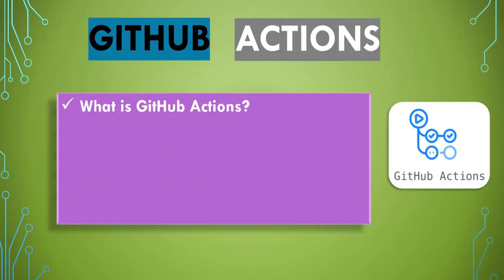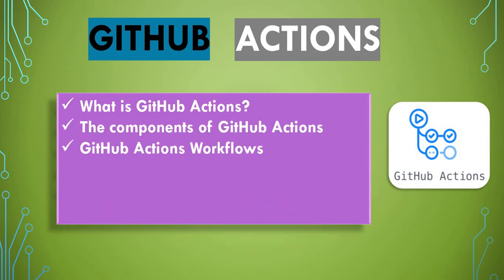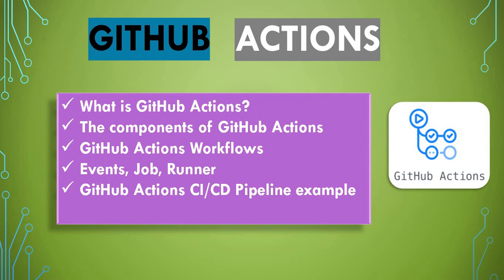We are starting this series with the basics of GitHub Actions. We'll talk about what GitHub Actions is, and cover the different components like workflows, events, jobs, and runners — the different things we have to configure when we write code in GitHub Actions. We will also see a sample GitHub Actions CI/CD pipeline, covering the overall workflow, how it runs, and the different kinds of jobs. More on creating your own workflows will come in the next tutorial.